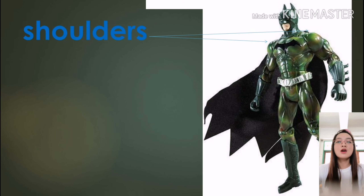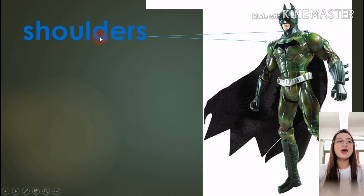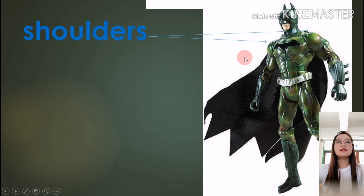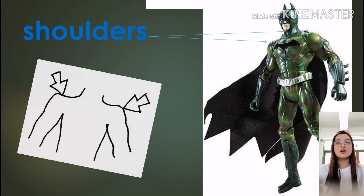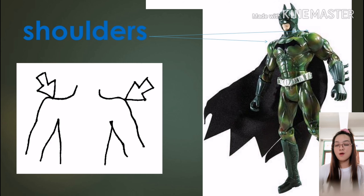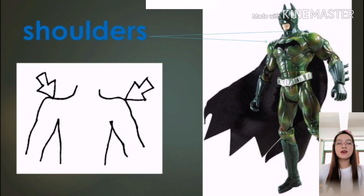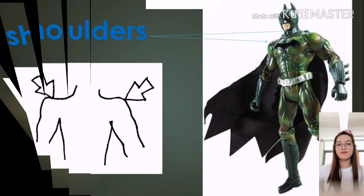Next, this will say: shoulders. Shoulders, shoulders, shoulders. Very good. Spell the word — S-H-O-U-L-D-E-R-S. Shoulders, shoulders, shoulders. Wonderful. How many shoulders do you have? You say: I have two shoulders. Very good.